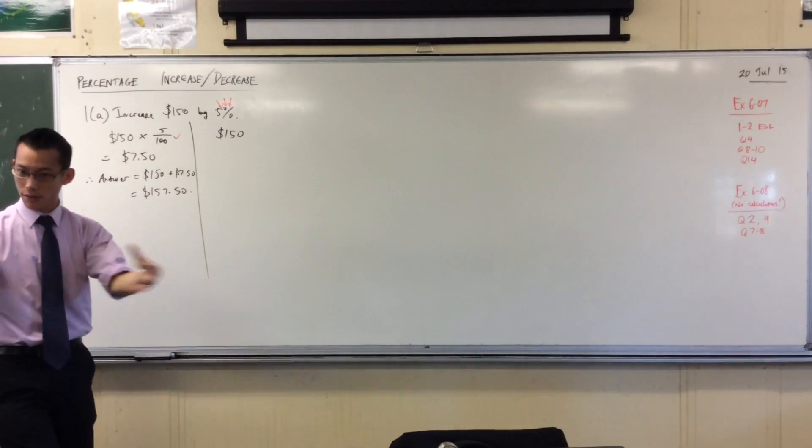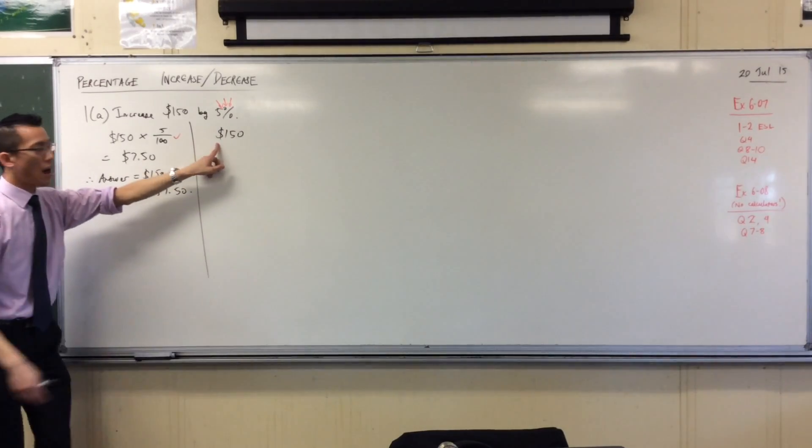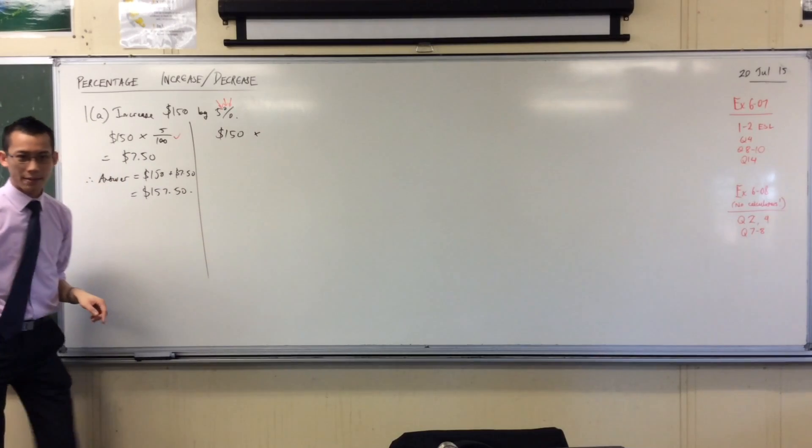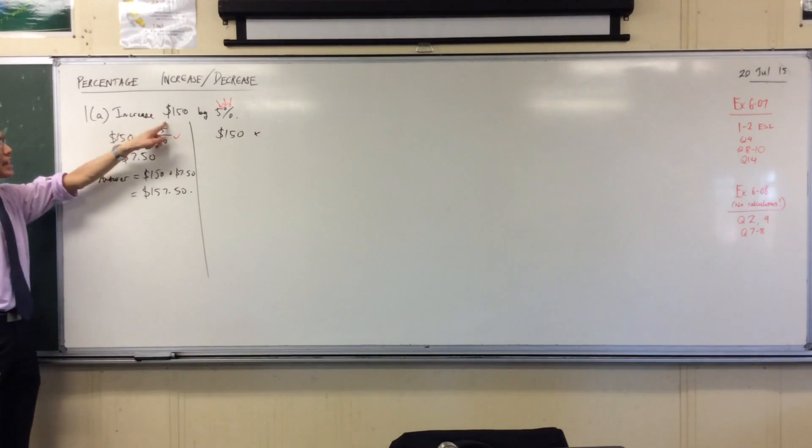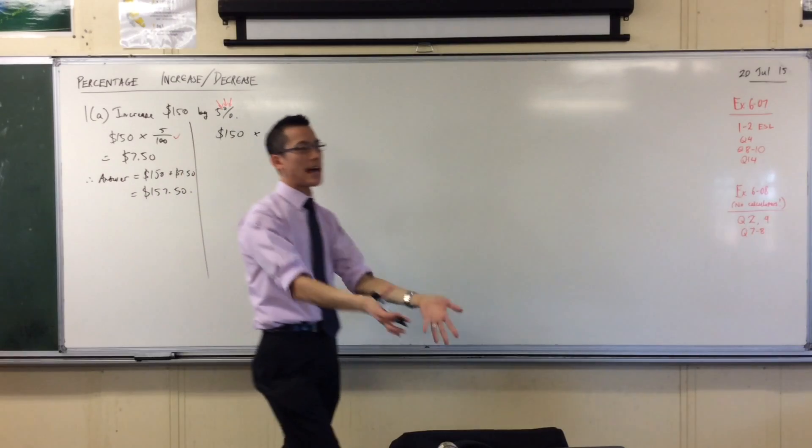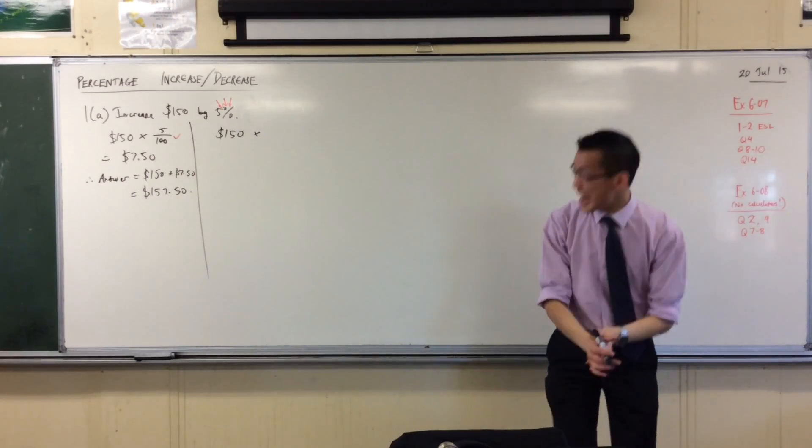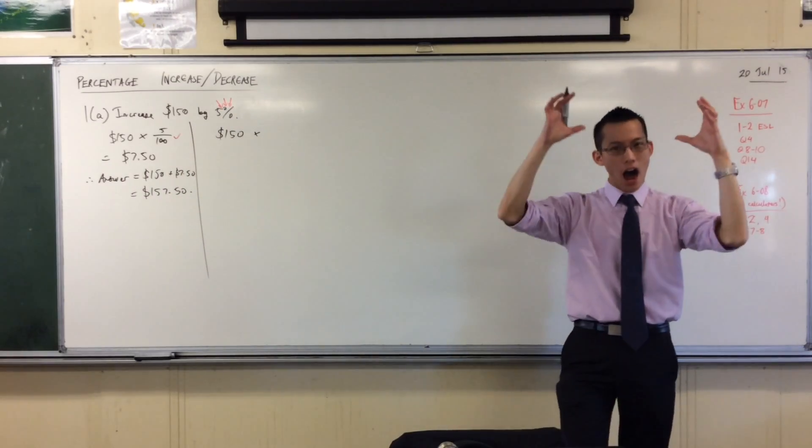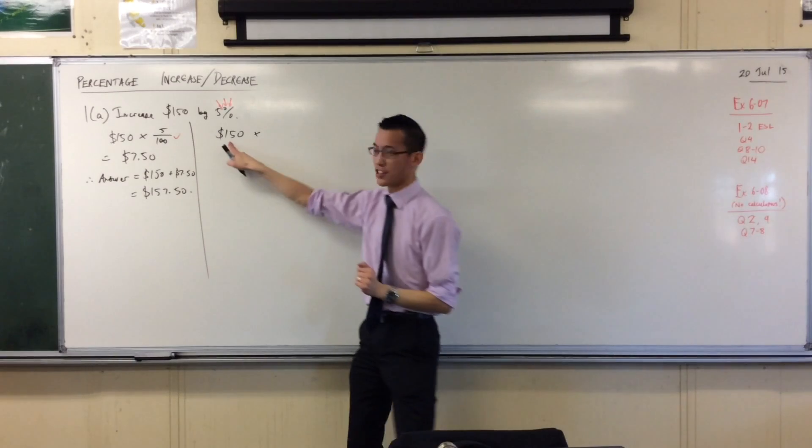I'm going to try and do all of those steps at once. I'm going to do this 150, I'm still going to multiply. But do you see, increasing $150 by 5% is exactly the same as taking 105% of my original amount.